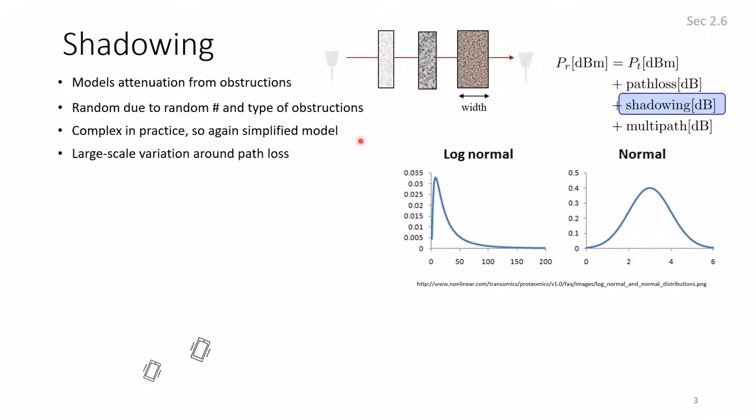The shadowing introduces large-scale variation, because if you're going through a building, then the same building will remain for some time. So this is called large-scale variation, because it does not change within a few dimensions, relative to the wavelength. But of course, it takes a while to go from one building to another, or one furniture to another. So large-scale variation around the path loss, as we're going to see in the next slide.